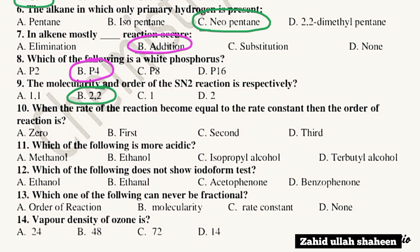Question 8: What is the order of reaction when the rate of reaction becomes equal to the rate constant? The answer is order zero.